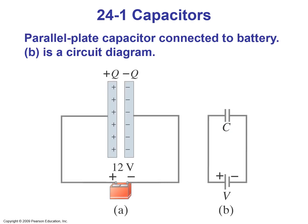The parallel plate capacitor is connected to a battery to be charged, as we can see in part A. In the circuit diagram represented in part B, we represent a capacitor with two parallel lines of equal size and show a capacitor with the letter capital C. For the battery, one parallel plate is smaller than the other, representing the negative electrode, and the other represents the positive terminal, shown as V — the voltage difference of the battery.